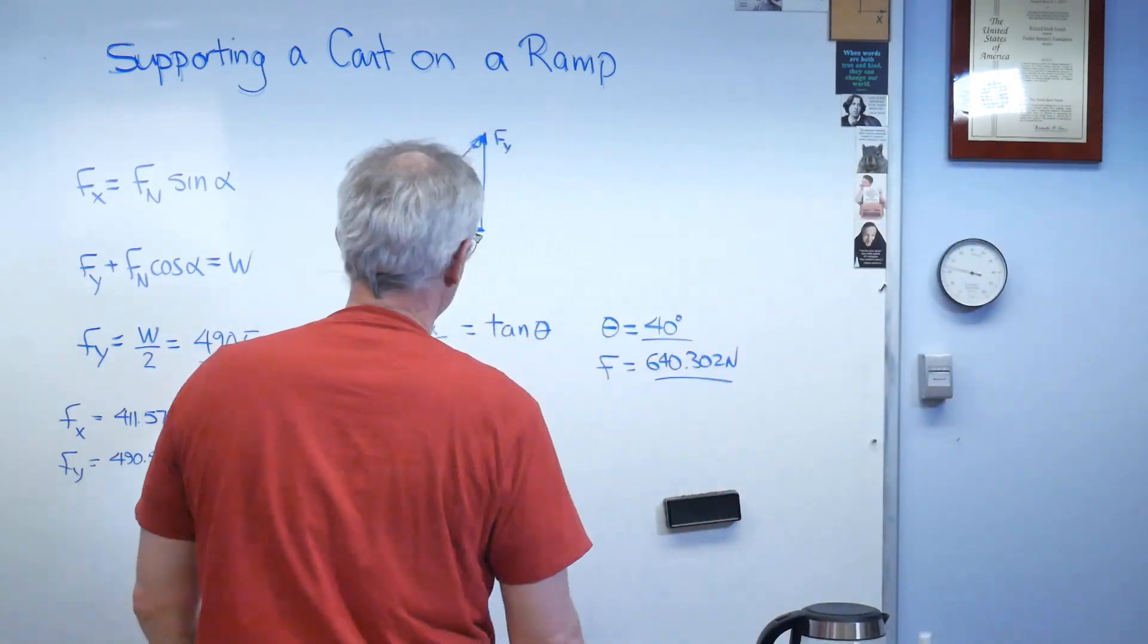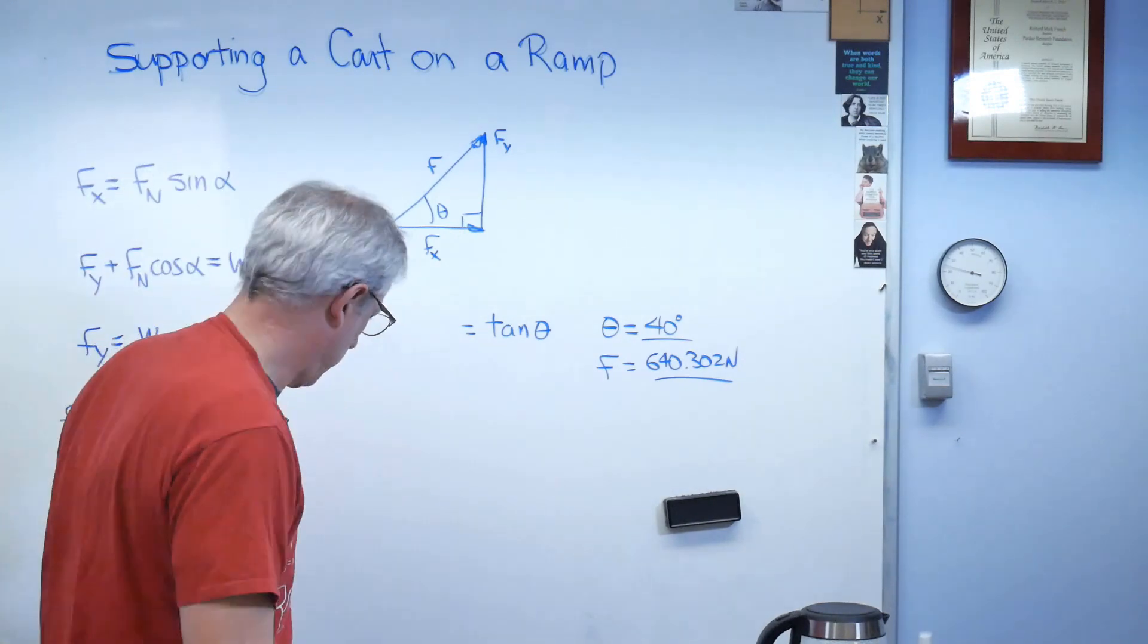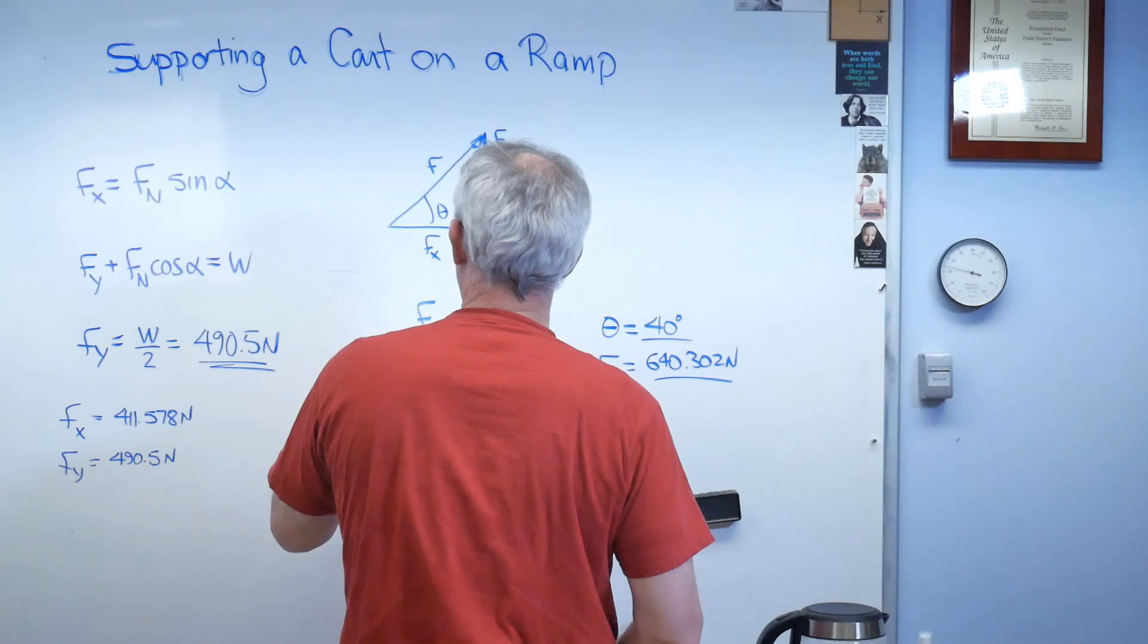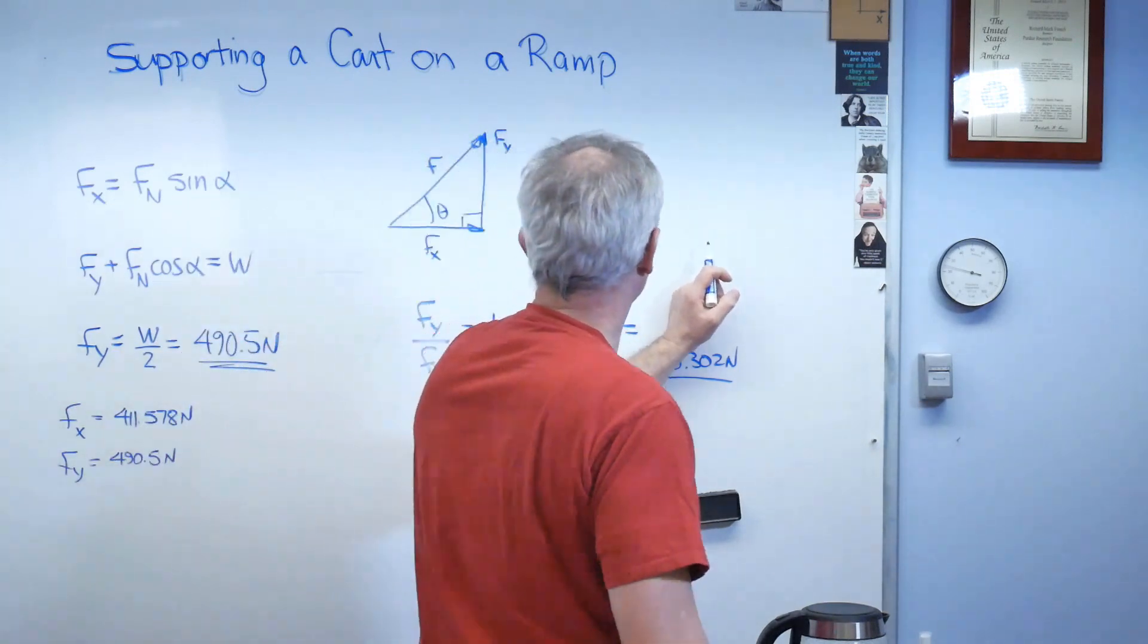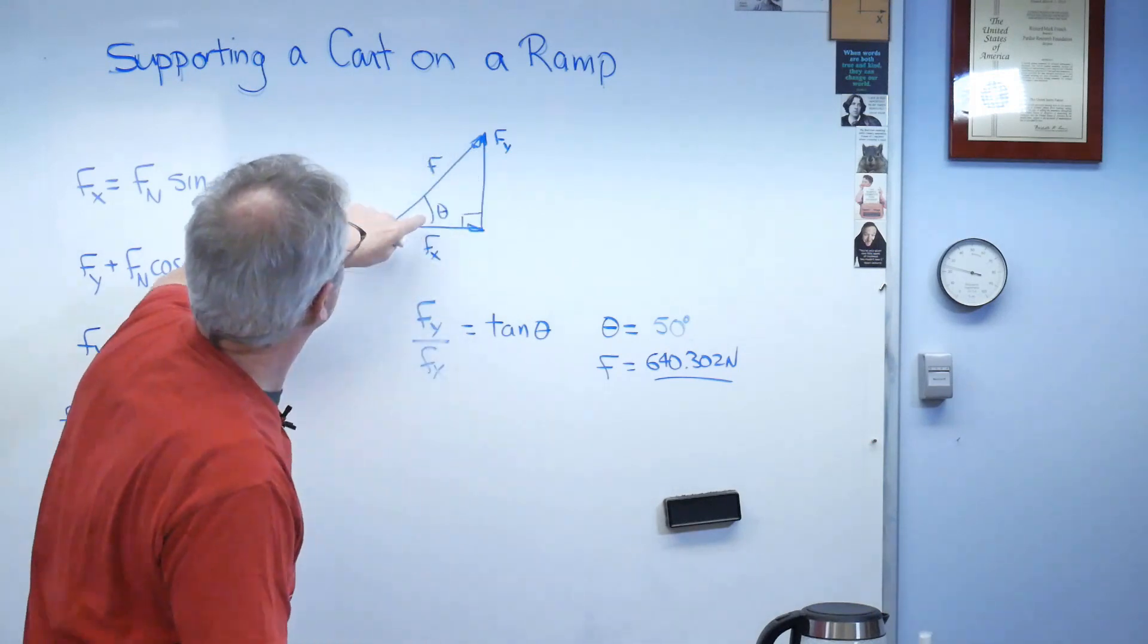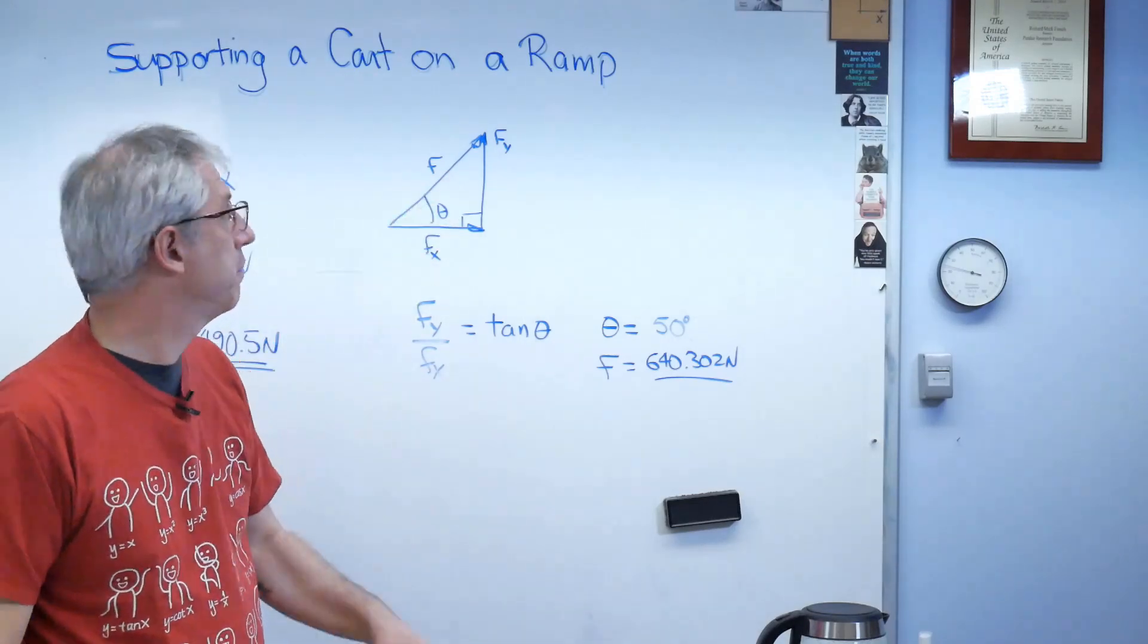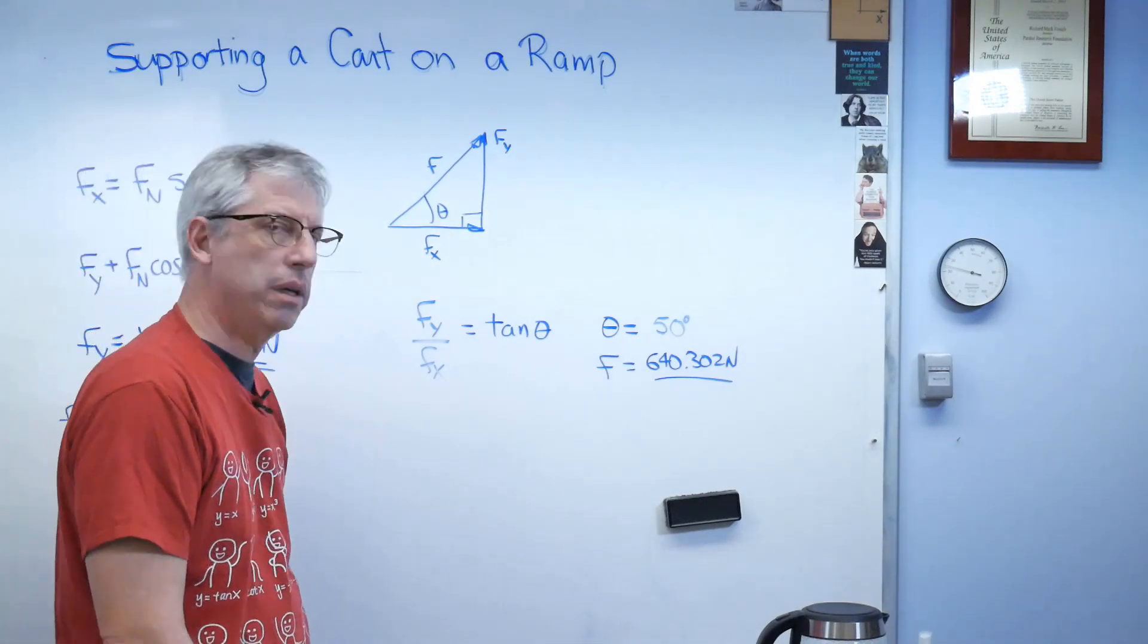Wait, wait, wait, stop. Did I write this tangent of theta is F_y over F_x, not F_x over F_y? By the way, this is now 50 degrees. Remember that this theta and the other angle at the beginning of the problem are defined differently. This one's defined from the horizontal and the other one was defined from the vertical. So this problem really is symmetric.